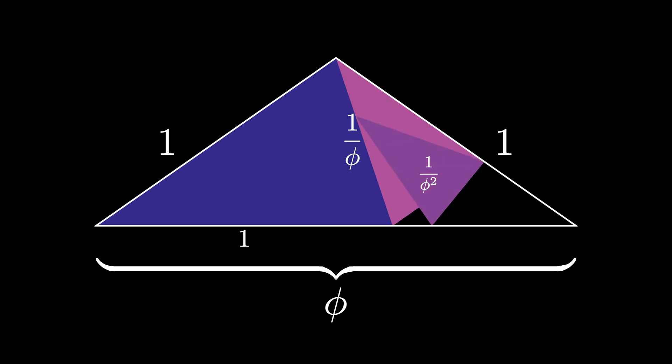But now we can repeat this process, scaling the new triangle by 1 over the golden ratio, and rotating it and fitting it in the empty space, and continuing again, scaling by 1 over the golden ratio, and fitting the new triangle in the empty space.